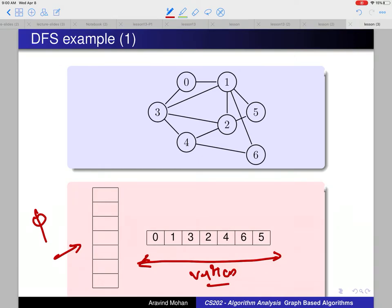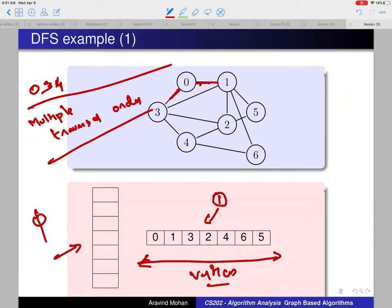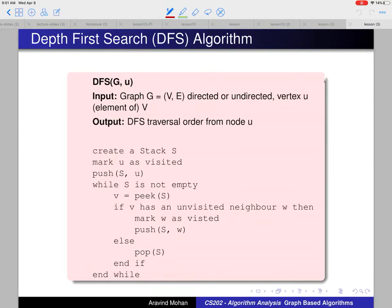One thing to keep in mind is that using this DFS algorithm, you can generate several different orderings for the traversal. For example, from node 0, instead of opting for neighbor 1, I could have opted for 3. Then the traversal would start differently. So in other words, there can be multiple valid traversal orders for DFS, depending on which neighbor you choose at each step.